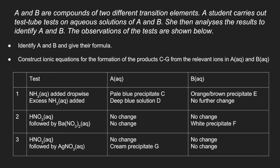So the observations of the tests are in the table. From the results we've got to identify A and B and give their formulae. And we've got to construct ionic equations for the formation of the products C through to G from the relevant ions in aqueous A and aqueous B.